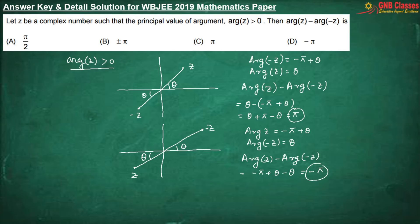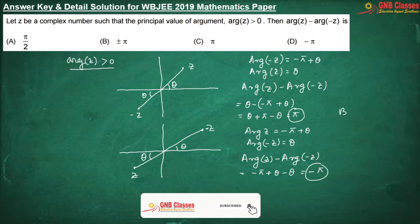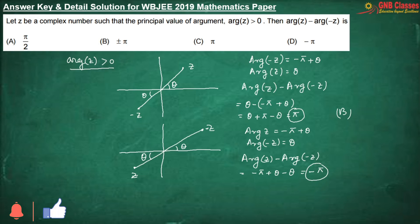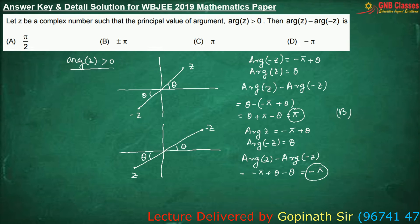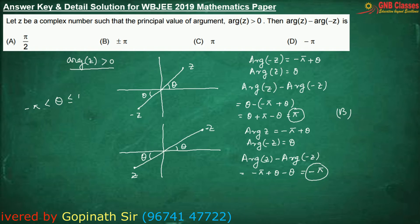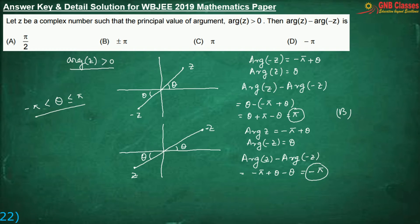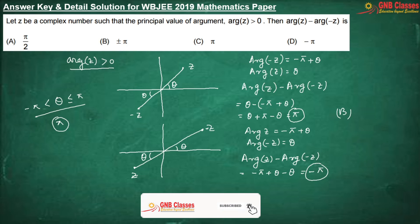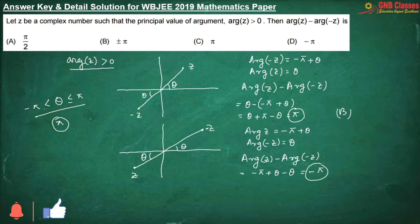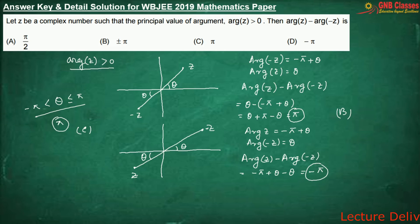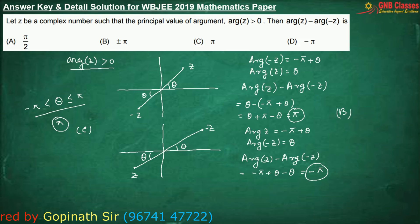Here students will make a mistake — they will choose option B because we are getting argument of z minus argument of minus z as plus-minus pi. But they will forget the thing given in the question: we need only the principal value of the argument. We know that the principal value of the argument always lies between minus pi and pi. So the required value is pi — minus pi is rejected as it does not fall in the principal value range. From that point, option C is correct. This question came in IIT JEE long ago, and it is easy if you know the concept of principal value of argument.